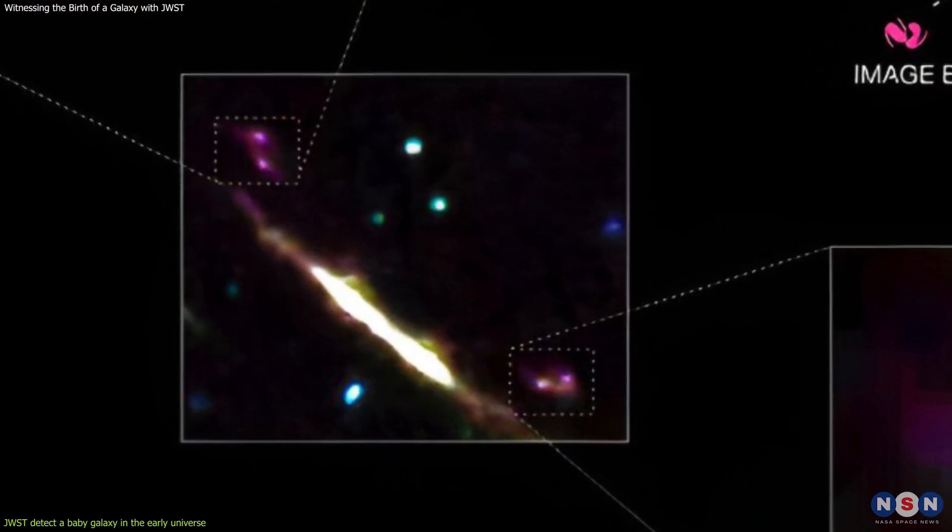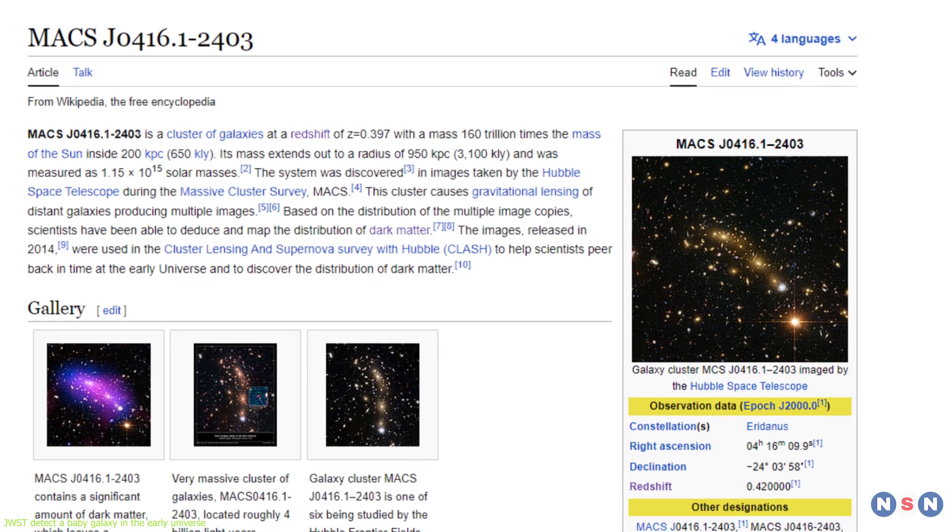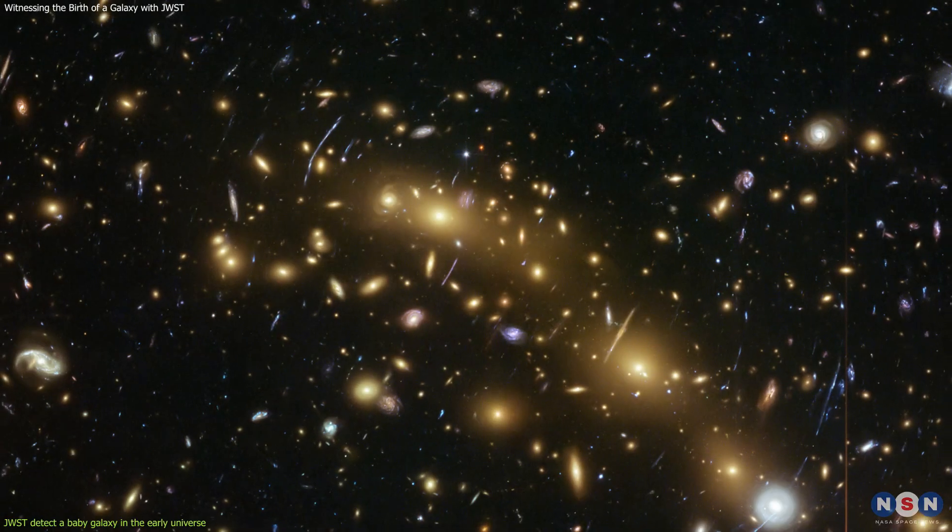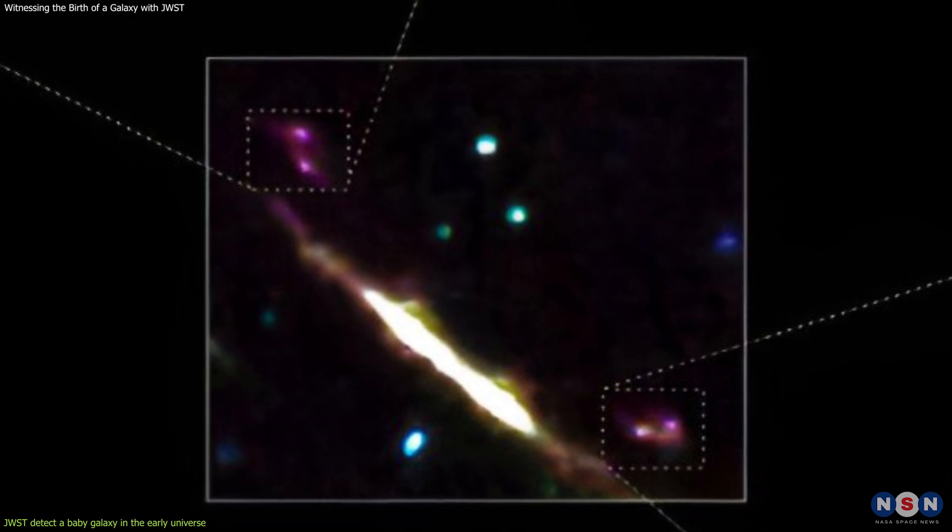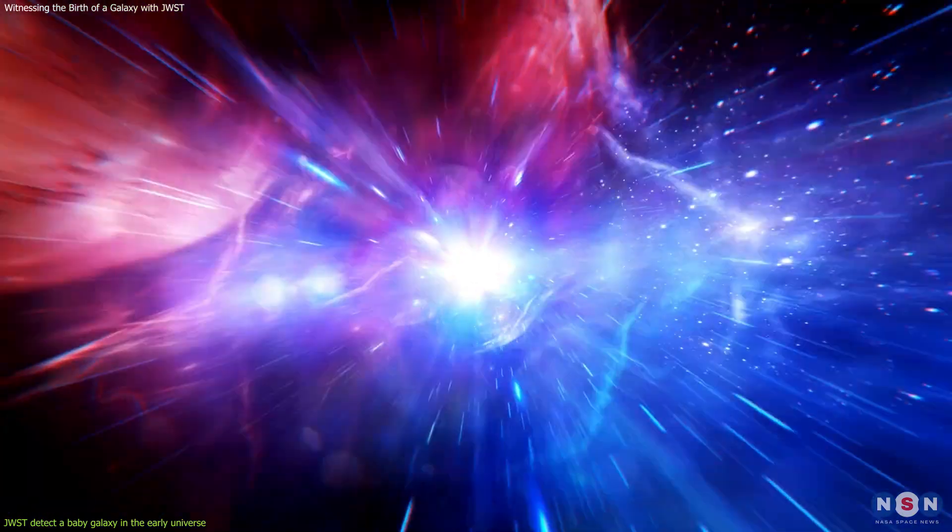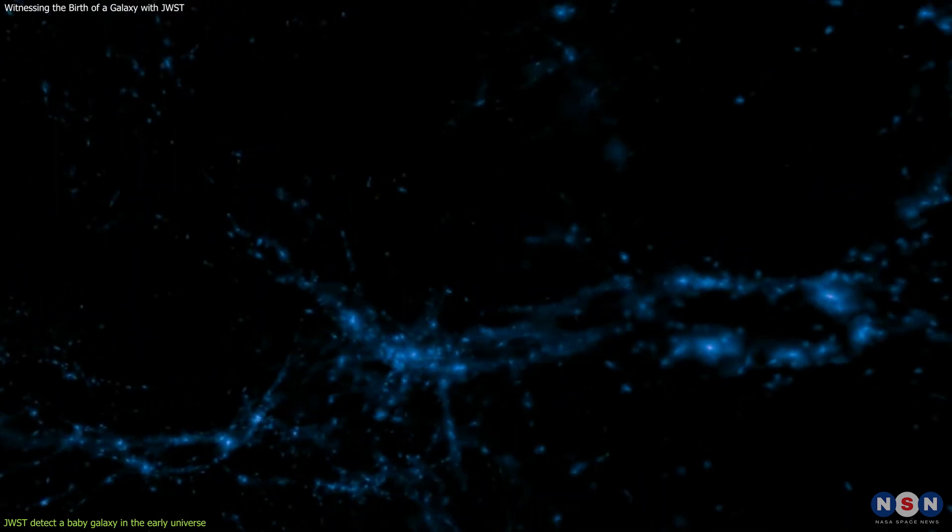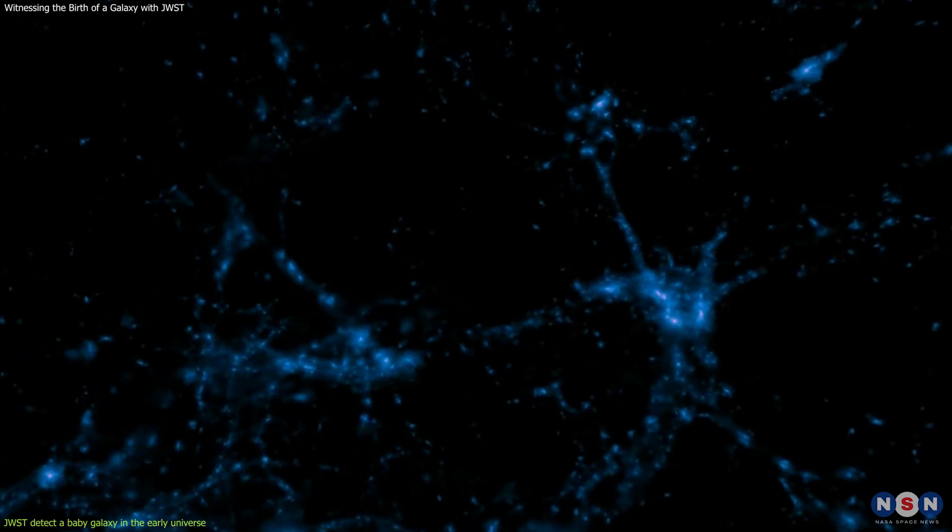The baby galaxy is located behind a massive cluster of galaxies called Max J0416-12403, which acts as a gravitational lens and amplifies its light by more than 10 times. The baby galaxy is so far away that its light took about 13 billion years to reach us, which means that we are seeing it as it was when the universe was only about 800 million years old, or less than 6% of its current age.